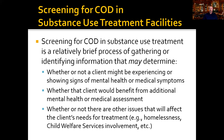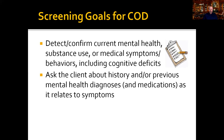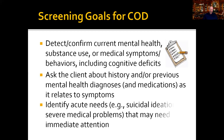A screening for a co-occurring disorder also tries to determine whether there are other issues that may affect the client's need for treatment — for example, whether the client is homeless, or whether child welfare services may be needed. The goals for screening include detecting or confirming current mental health, substance use, and medical symptoms including cognitive deficits, asking about history and previous mental health diagnoses, and identifying any acute needs.